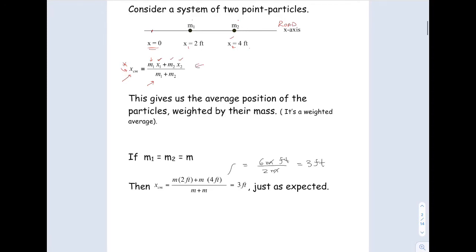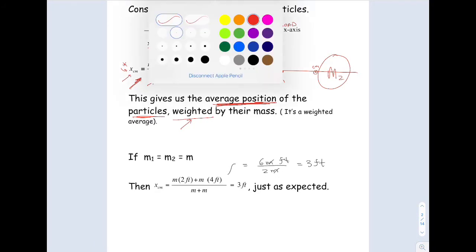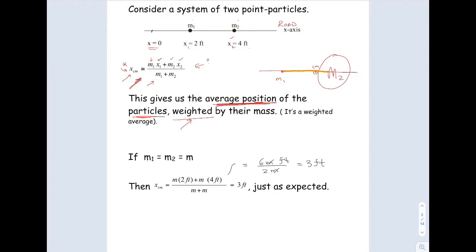We haven't derived this. We'll do that when we get to the chapter on torque. We're just going to see if it works in a special case. This position of the center of mass gives us the average position of the particles weighted by their mass — I'm using the word weight like a statistical weight, a weighted average. So it would make sense that if M1 is much larger than M2, the center of mass would be much closer to number two. Imagine if you had a stick between these two and wanted to balance them on your finger — your finger would probably be more over here toward the big one, like a dumbbell with a big weight on one side and a small weight on the other.